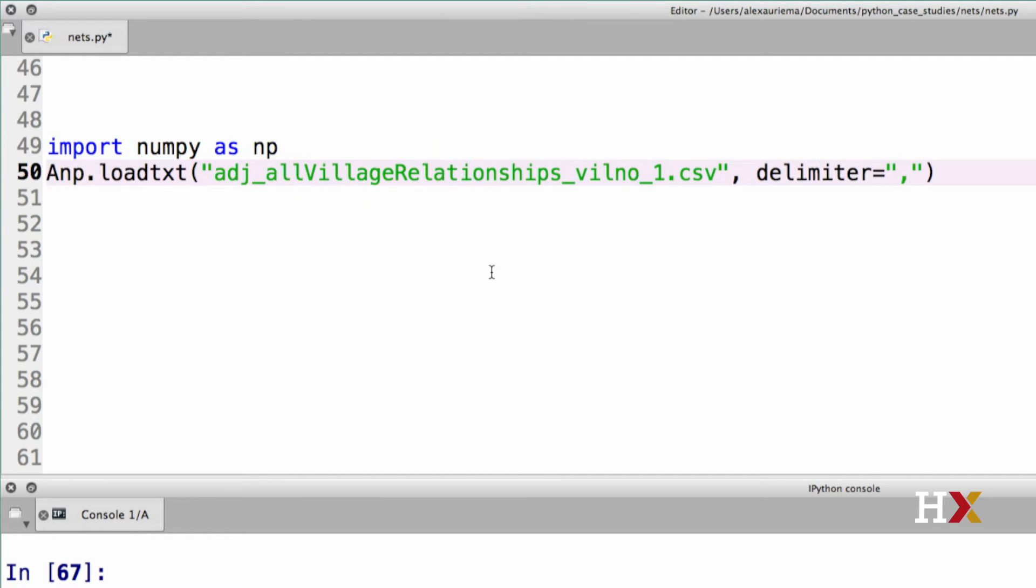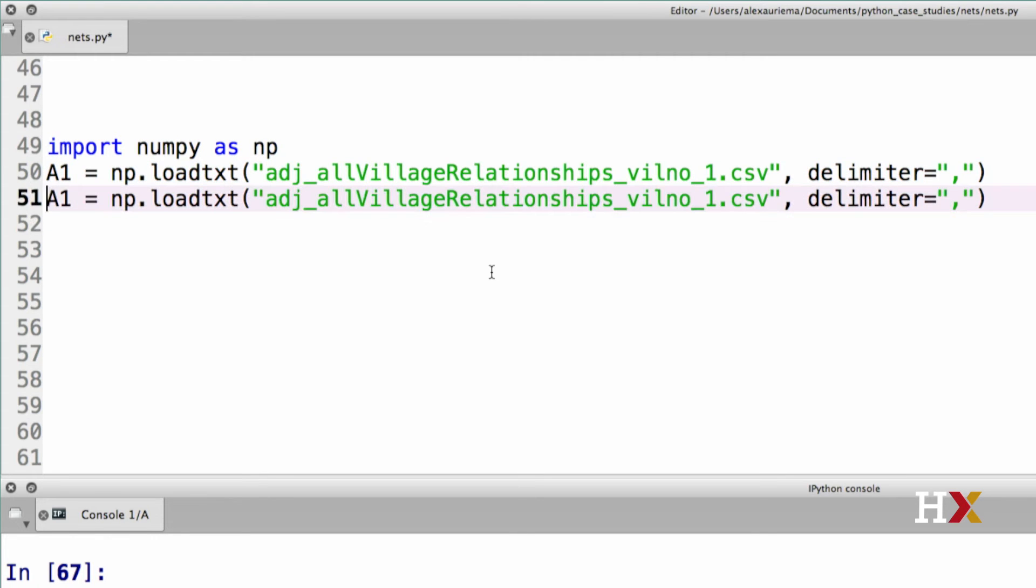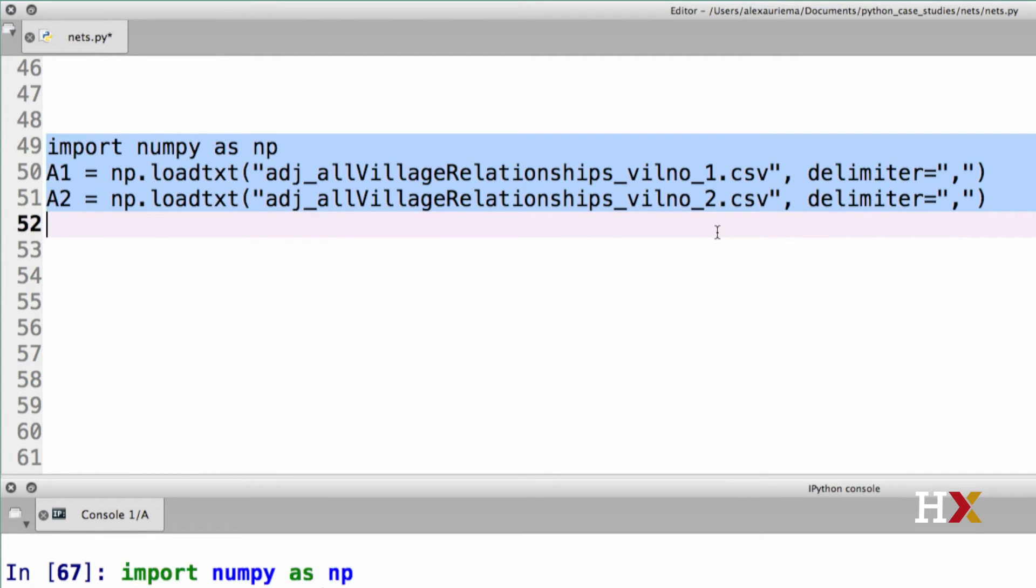We will call this A1. Then we have our second adjacency matrix, A2, which corresponds to village 2. And we can now run these three lines of code.